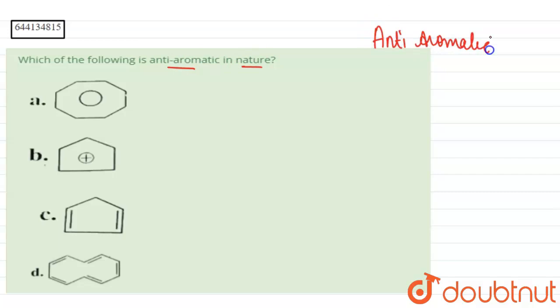So we know for a compound to be anti-aromatic, the condition is that first of all it should be cyclic, then it should have conjugation, then it should be planar, and has 4n pi electrons.